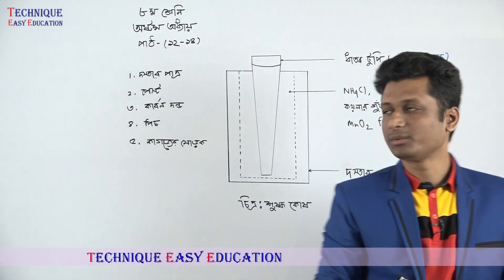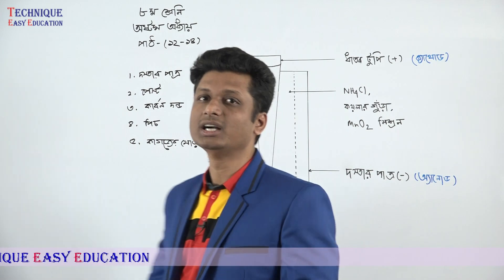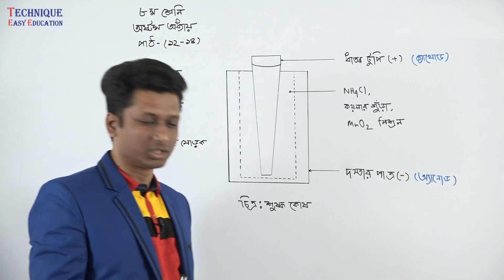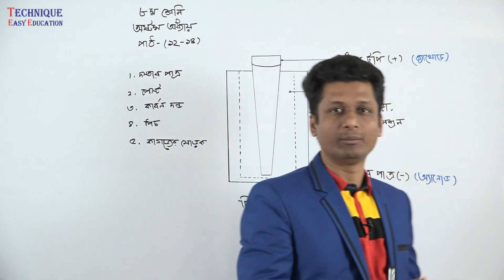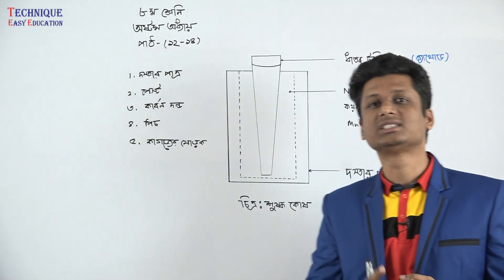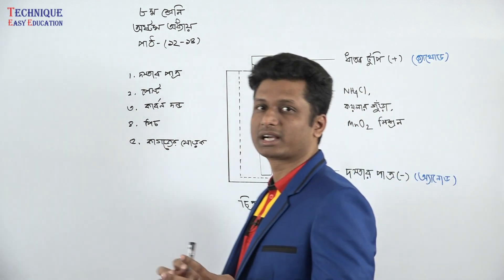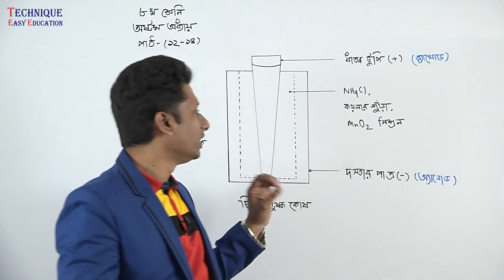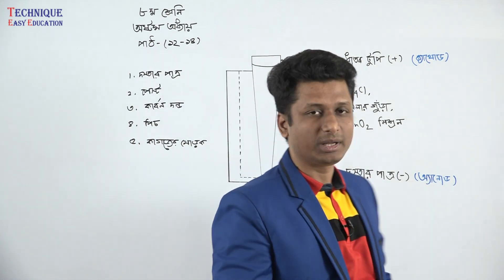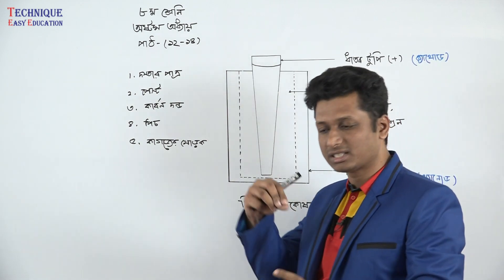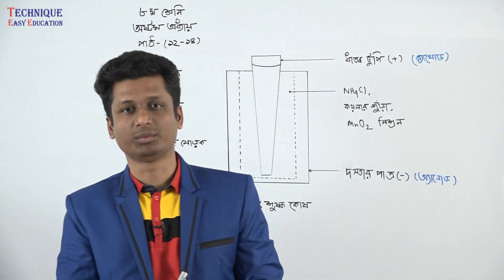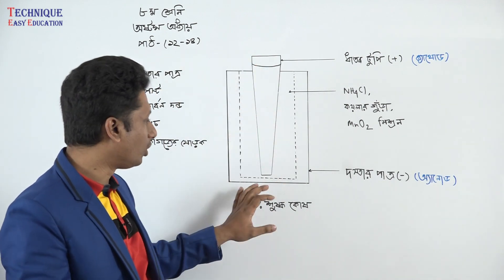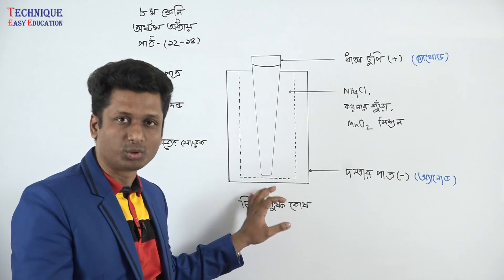Let's revise the whole process. What do we do with the components? Ammonium chloride, coiler, manganese dioxide, and so on — this is the dry cell composition. But when we combine the carbon rod, it becomes part of the structure. The carbon rod is a key component of this.